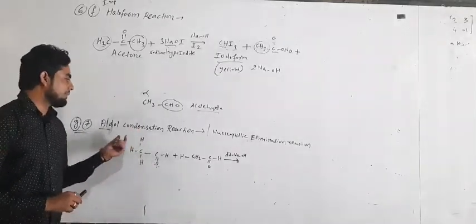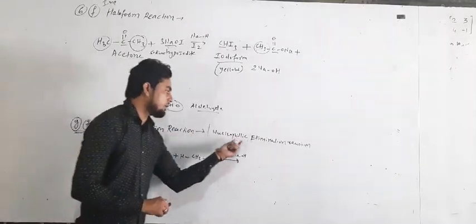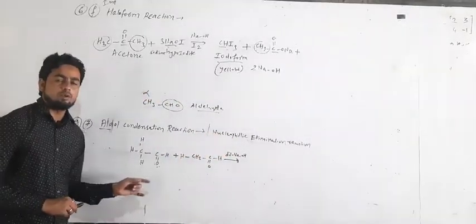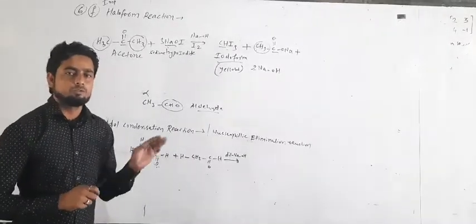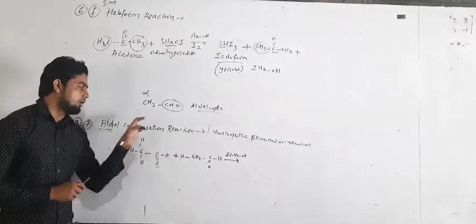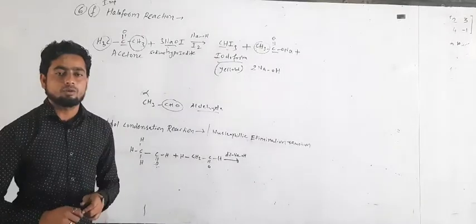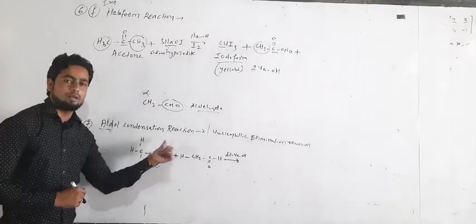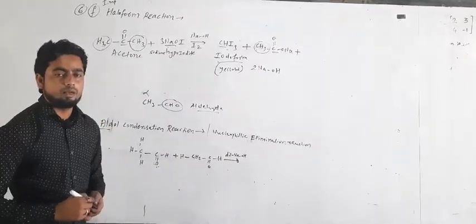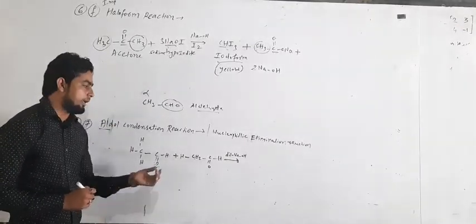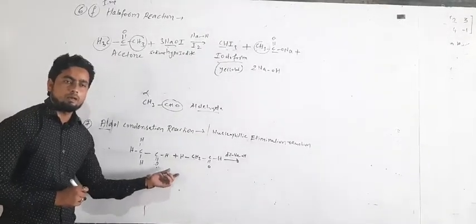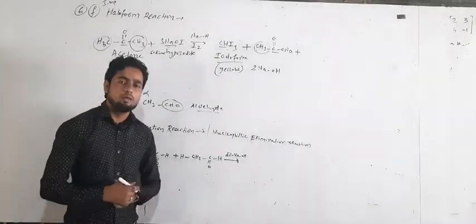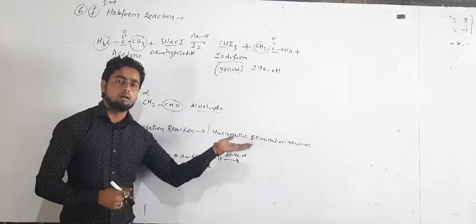This is a nucleophilic elimination reaction. When two similar molecules of aldehyde react with each other, they give aldol condensation. If the molecules are different, it is called cross aldol condensation, which we will learn about. The aldol condensation is defined as when two similar aldehyde or ketone molecules which have alpha hydrogen react to form the aldol product, which on further elimination of a water molecule forms alpha-beta unsaturated aldehyde or ketones.